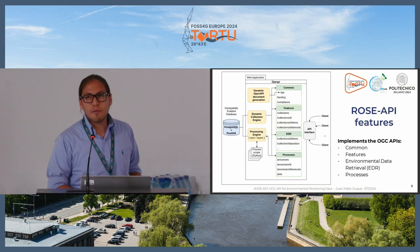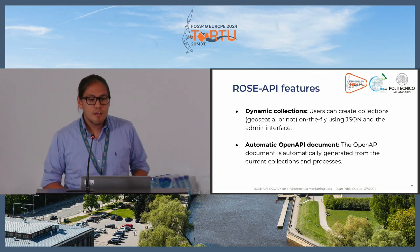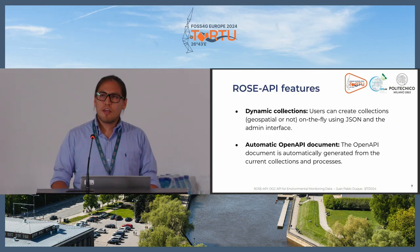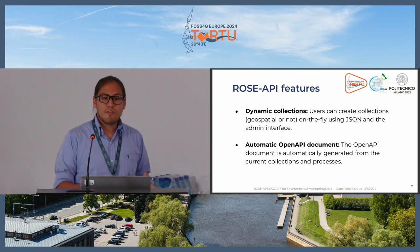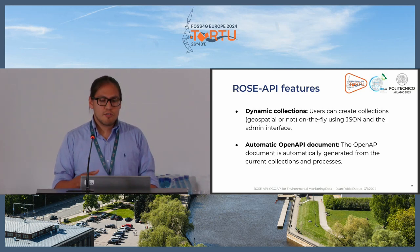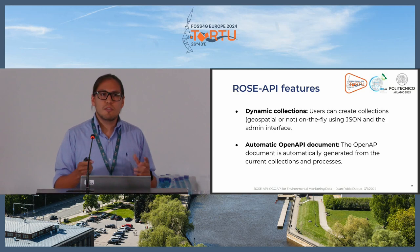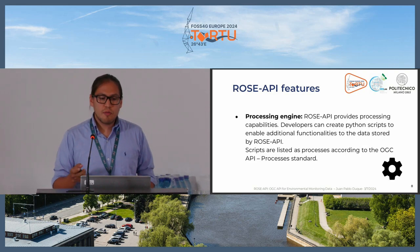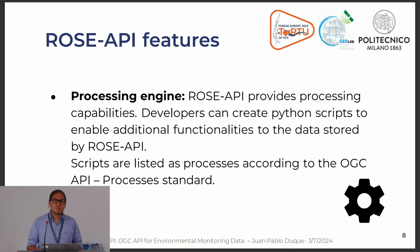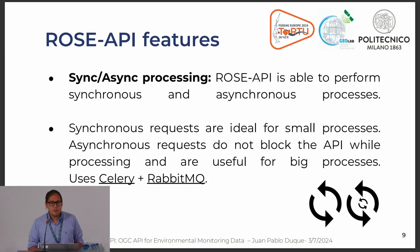This is the architecture of the application — we can discuss it later if you want. One key feature is dynamic collections: you can create collections, which can be geospatial or non-geospatial layers, on the fly using a graphical user interface. We also have an automatic OpenAPI document that is automatically generated from the collections. Additionally, there is a processing engine where you can write your own Python scripts to further enhance or create new functionalities for the data stored in ROSE API, with both asynchronous and synchronous processing capabilities.